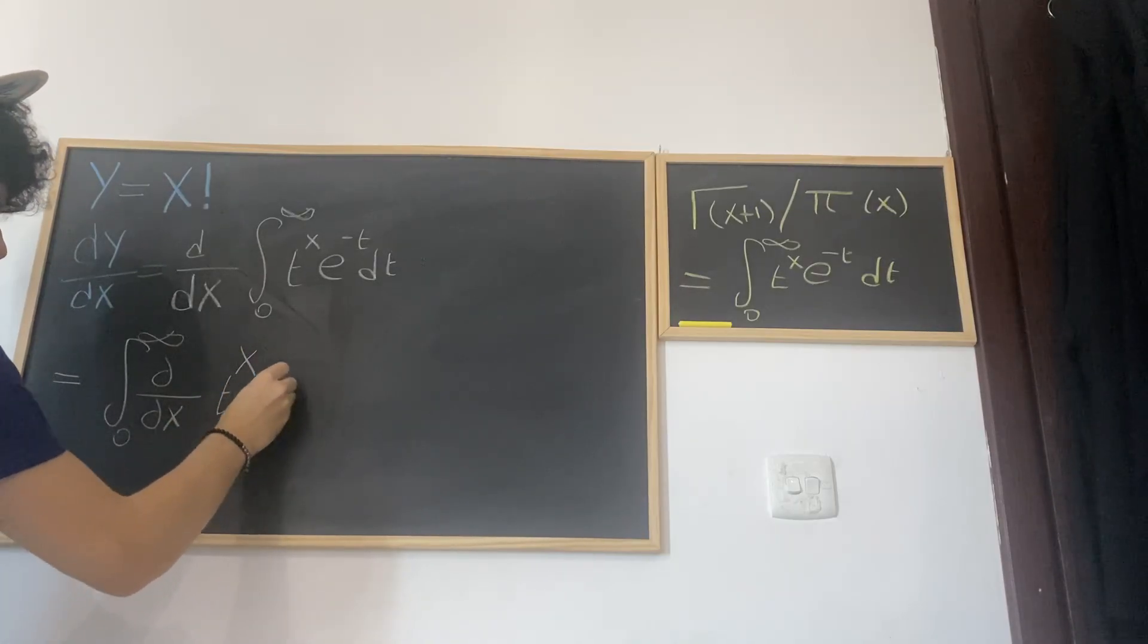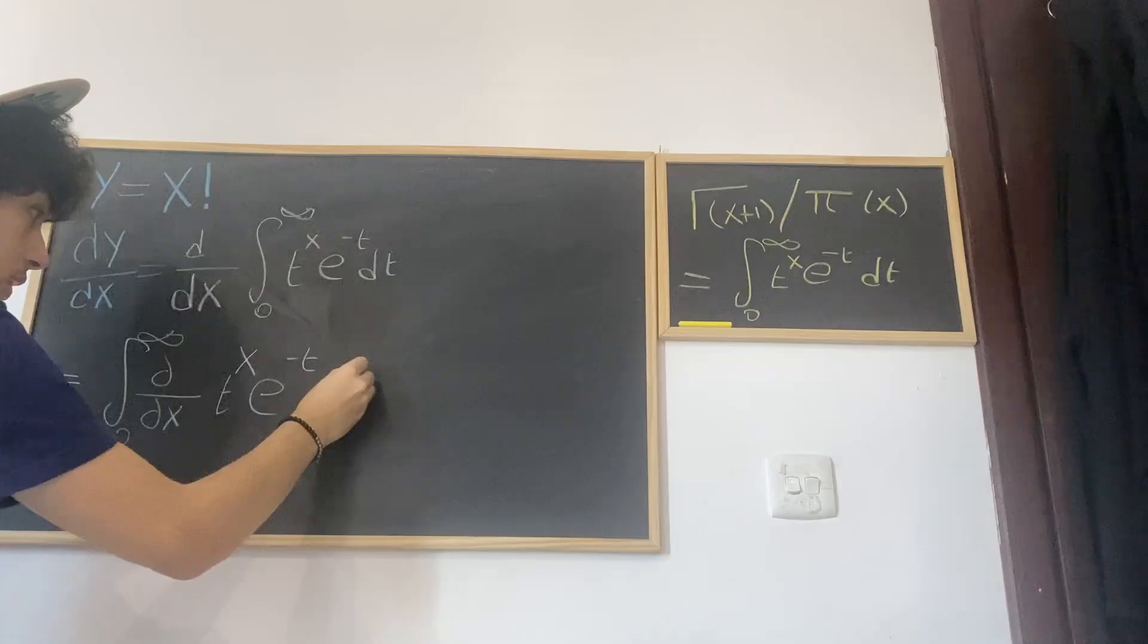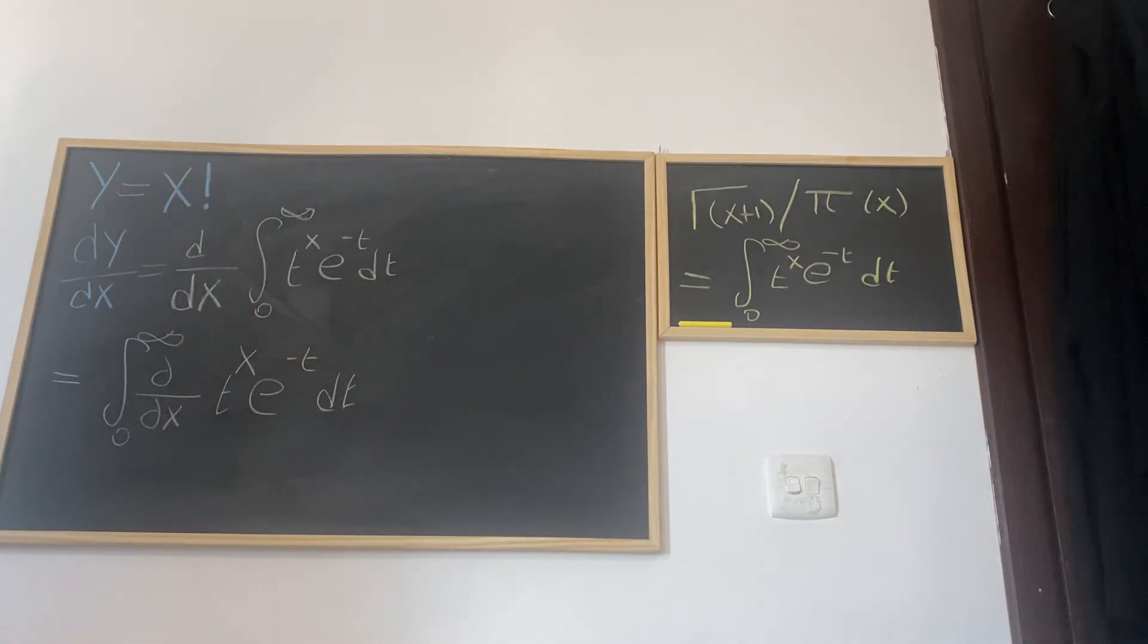Now we treat t here as a constant and will differentiate with respect to x. That's what we're going to do. So basically all we're going to do is differentiate this exponential function.